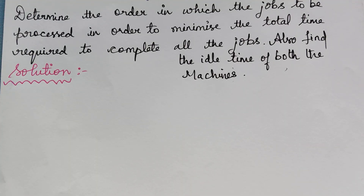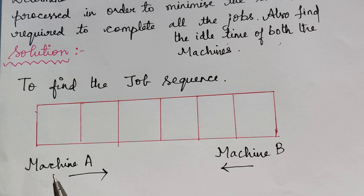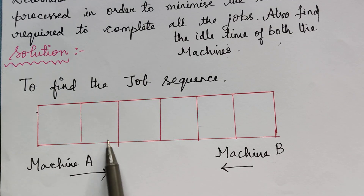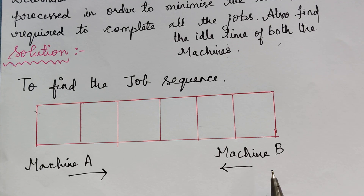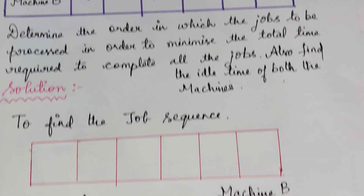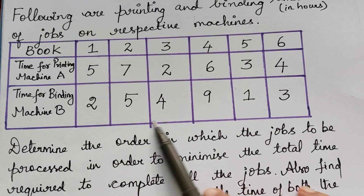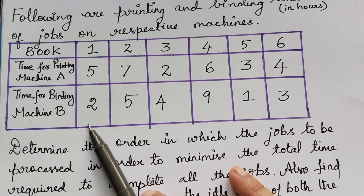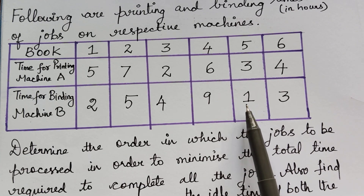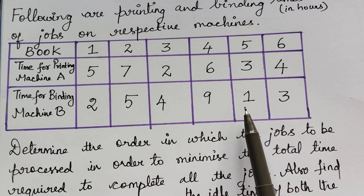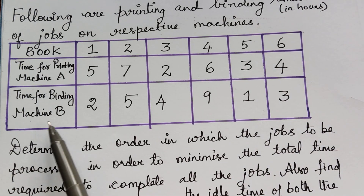Since we have 6 jobs to be performed, I have drawn 6 cells. As usual, the first machine is written on the left, which is machine A, and the second machine, machine B, is written on the right. We have to look out for the minimum value out of all these processing times. This value of 1 is the minimum, and it corresponds to job 5 and also to machine B.